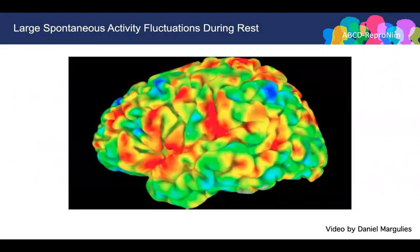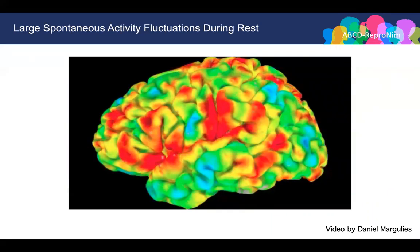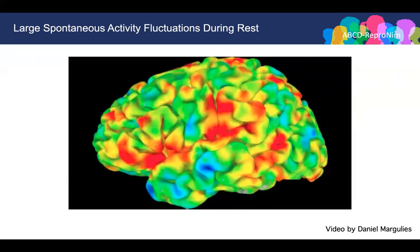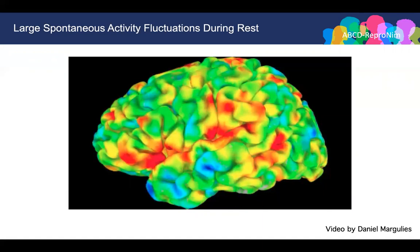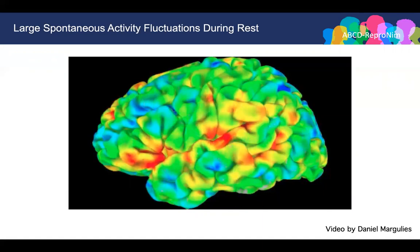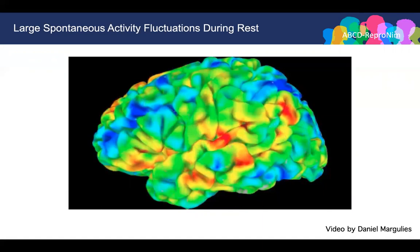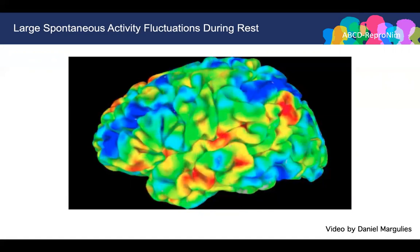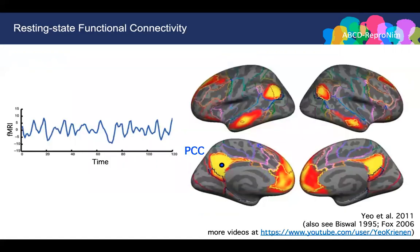The brain is active even at rest. This video shows the functional MRI signal when the subject is lying at rest in the scanner. As you can see, large spontaneous activity fluctuations appear throughout the brain. These intrinsic fluctuations are relevant here because, as demonstrated by Biswal, the fluctuations can be used to measure functional connectivity in the human brain.